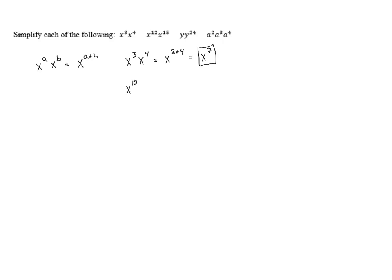Similarly, if we have x to the 12th times x to the 15th, we can add those exponents, and that gives us x to the 27th power, because 12 plus 15 equals 27.